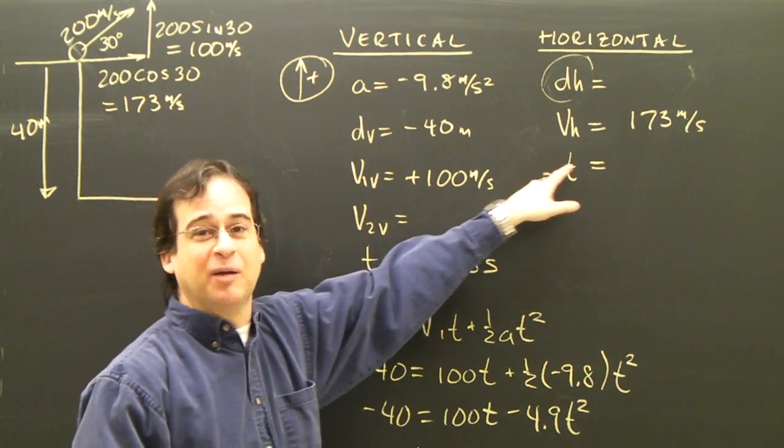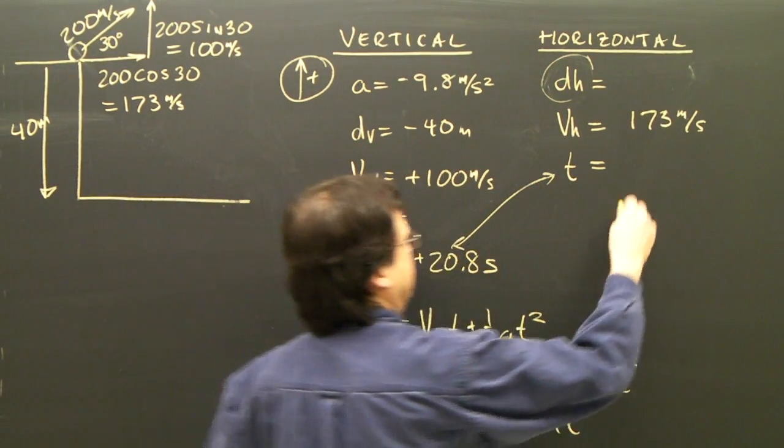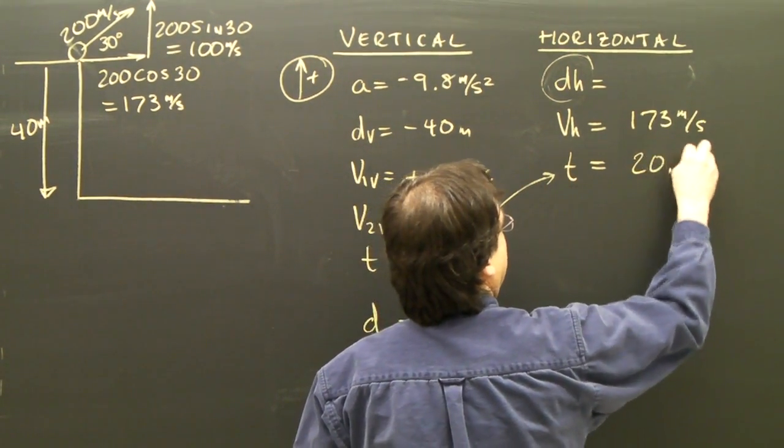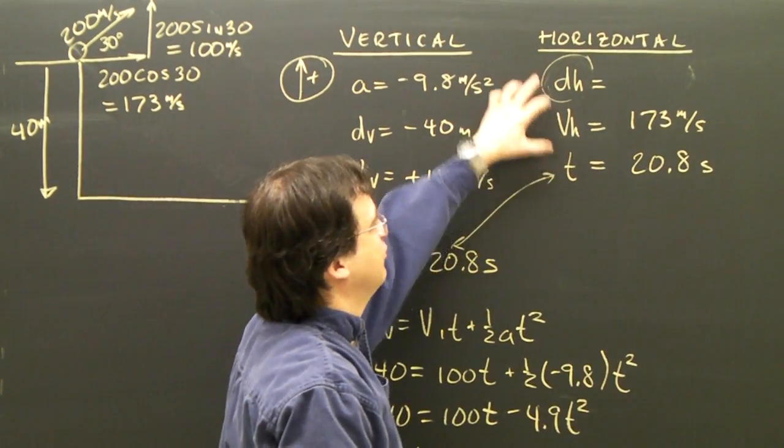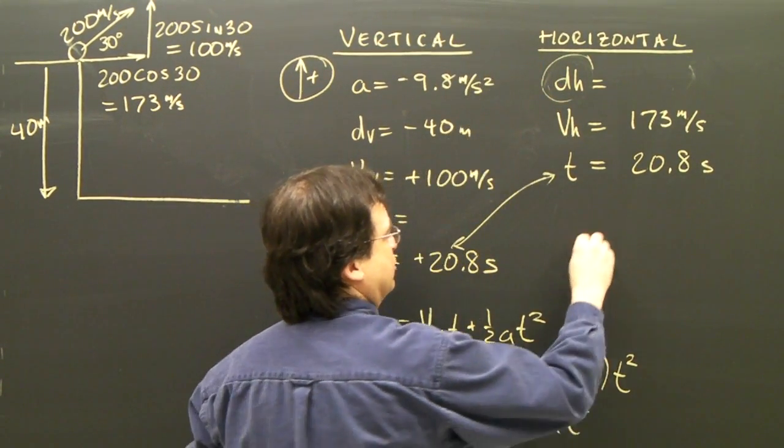Since I have that now, I can bring it up into this column. I use my vertical information to get the horizontal. 20.8 seconds. I have two of the three. I can now solve for the horizontal distance.